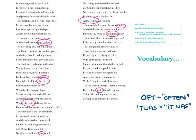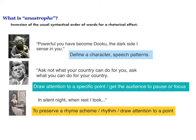Before we take a look at the poem as a whole, we're going to learn about a rhetorical concept called anastrophe. This is when a speaker or writer inverts the usual syntactical order of words for a rhetorical effect. You should also remember that syntax simply means word order, and there are many reasons why a poet or writer would want to utilize anastrophe and play around with syntax, and I'll show you three examples here.